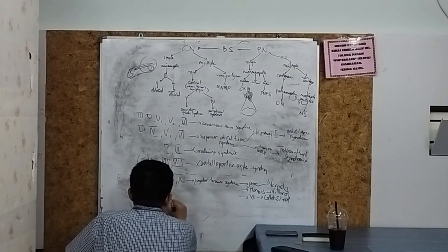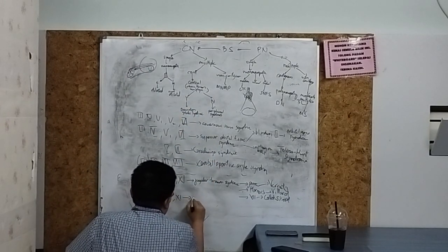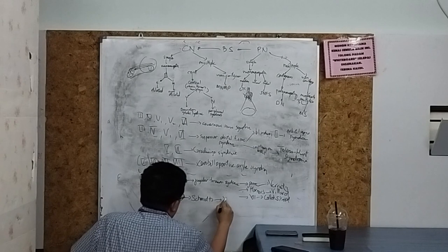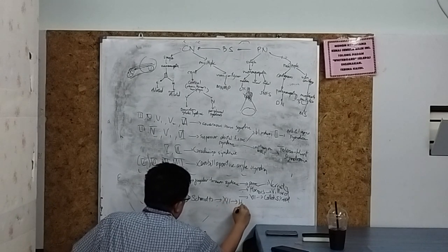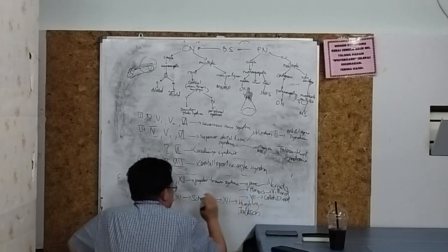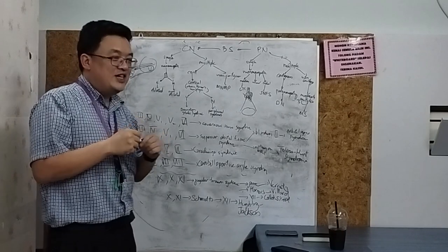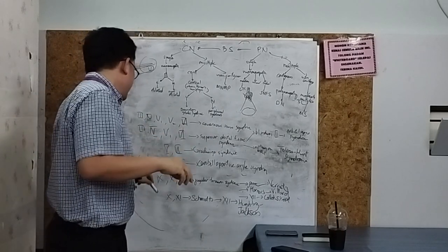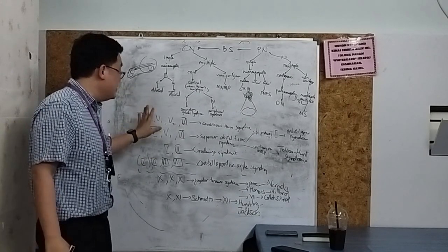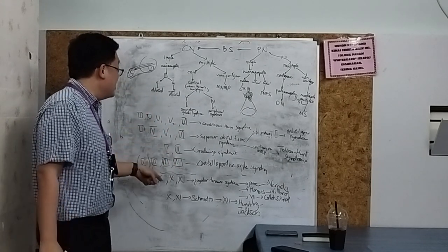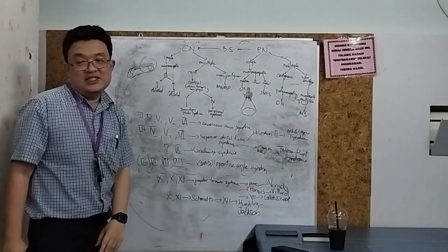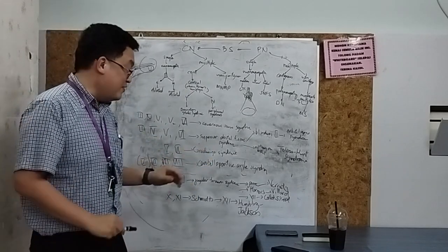If you have jugular foramen syndrome plus a Horner's — so 8, 9, 10, 11, and Horner's — this is Villaret syndrome. If you have 9, 10, 11, and 12, this is Collet-Sicard syndrome. If you have 10 and 11 only, this is Schmidt syndrome. If you have 10, 11, and 12, this is Hughlings Jackson syndrome. These are all peripheral cranial nerve syndromes — no cross hemiplegia, no ataxia, no Horner's.